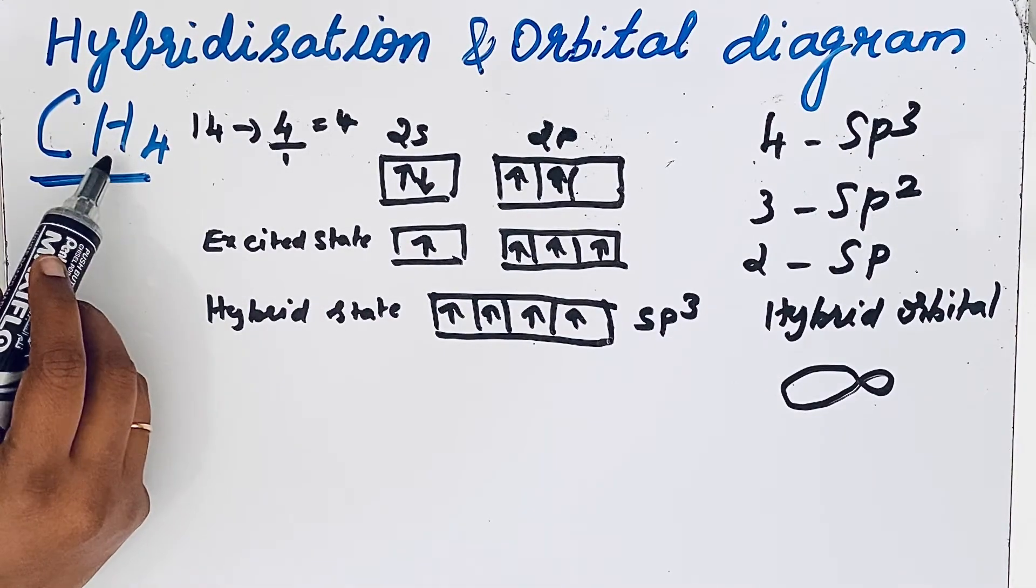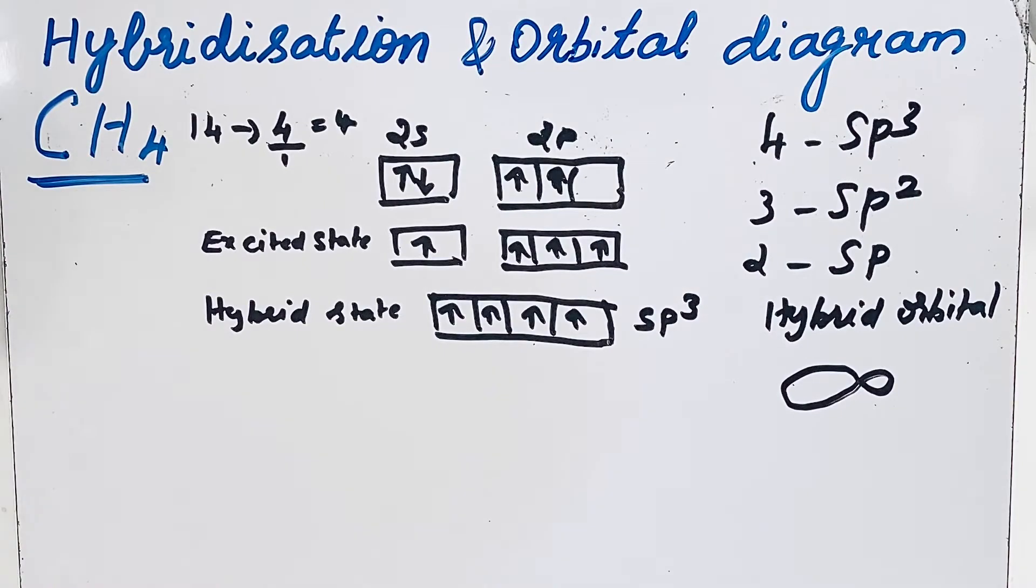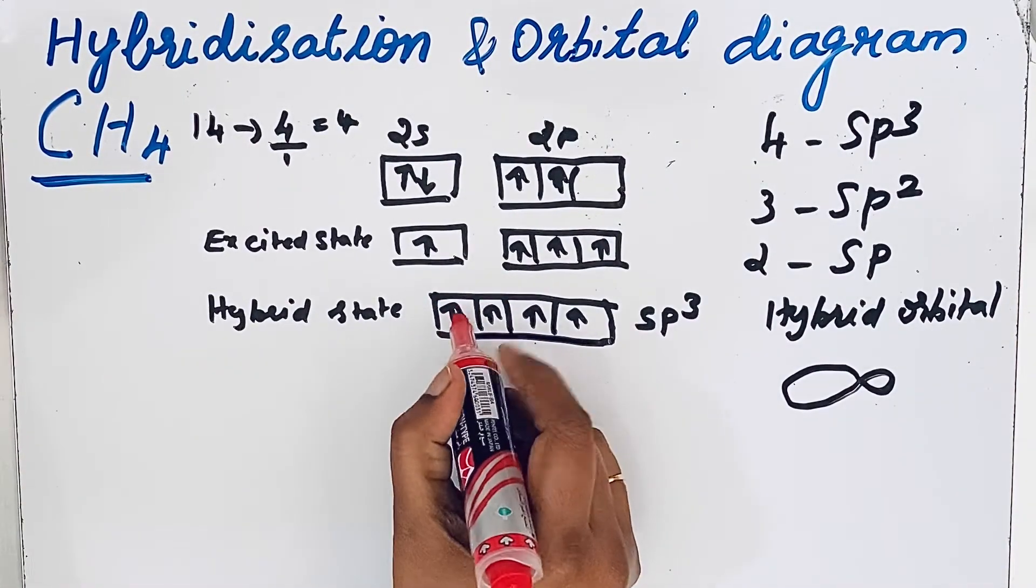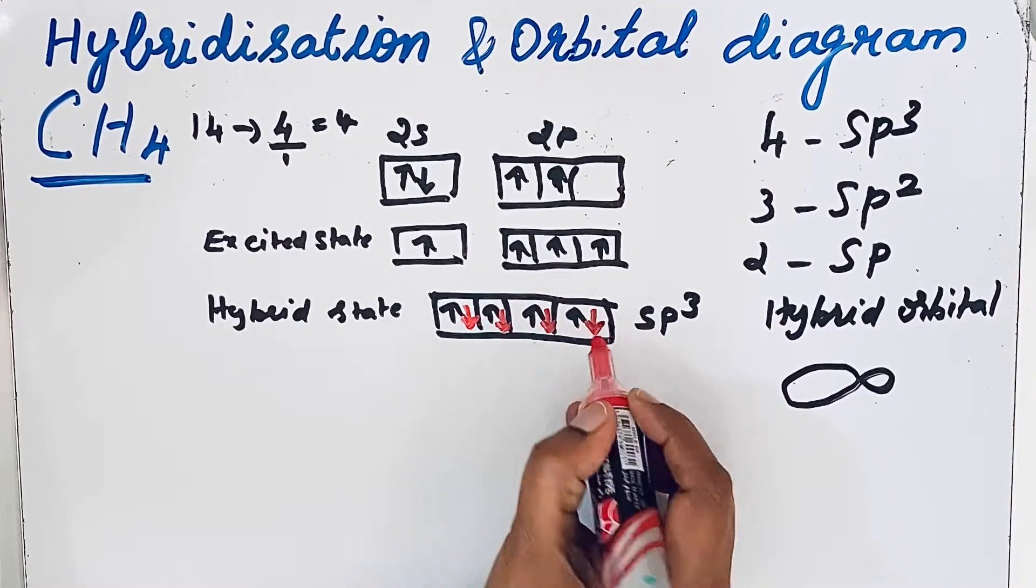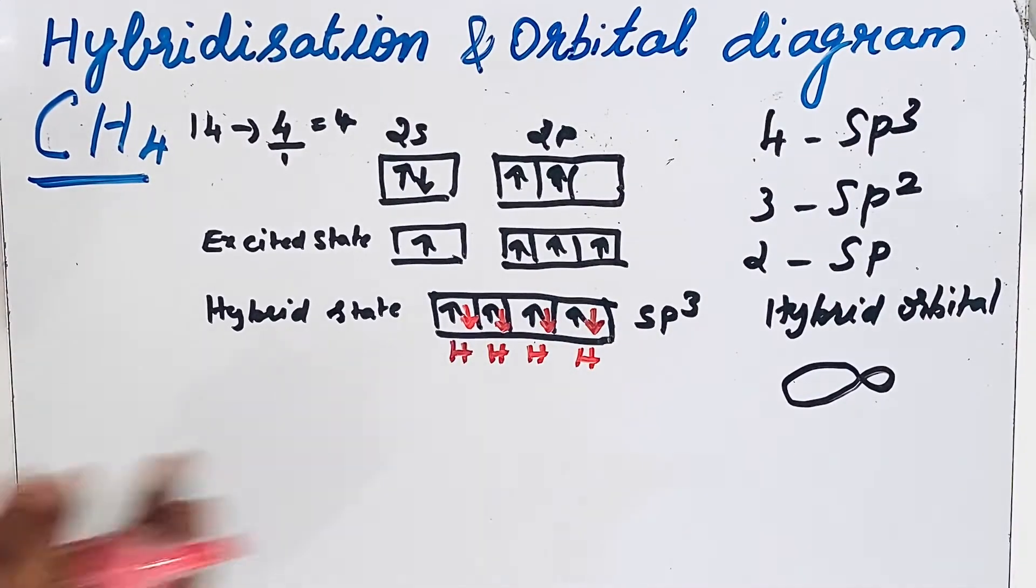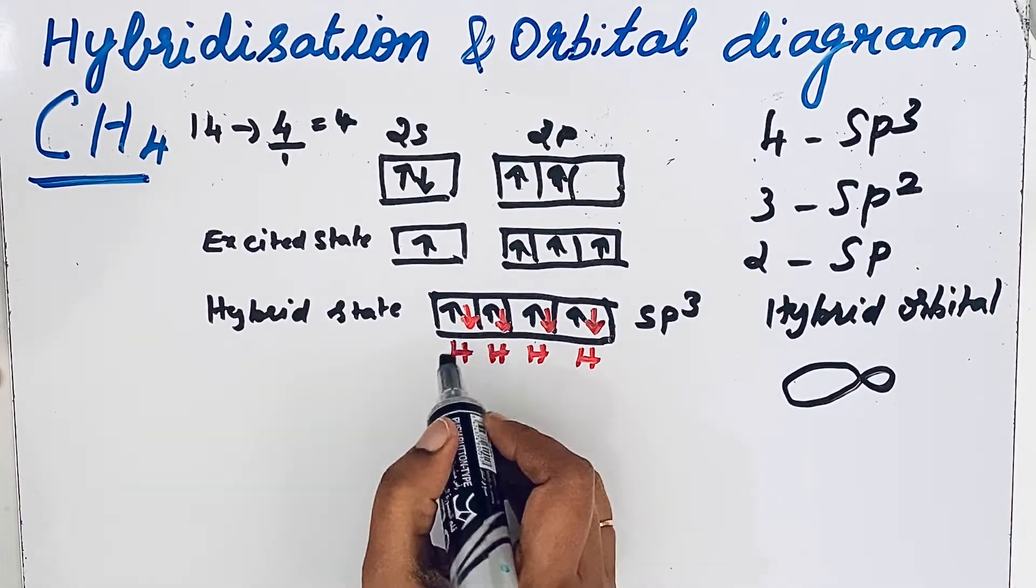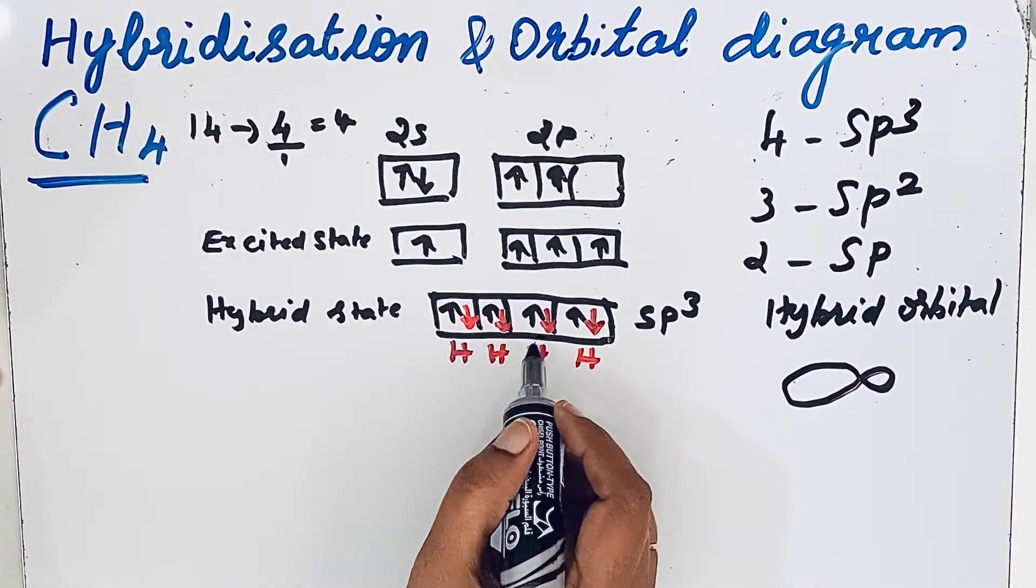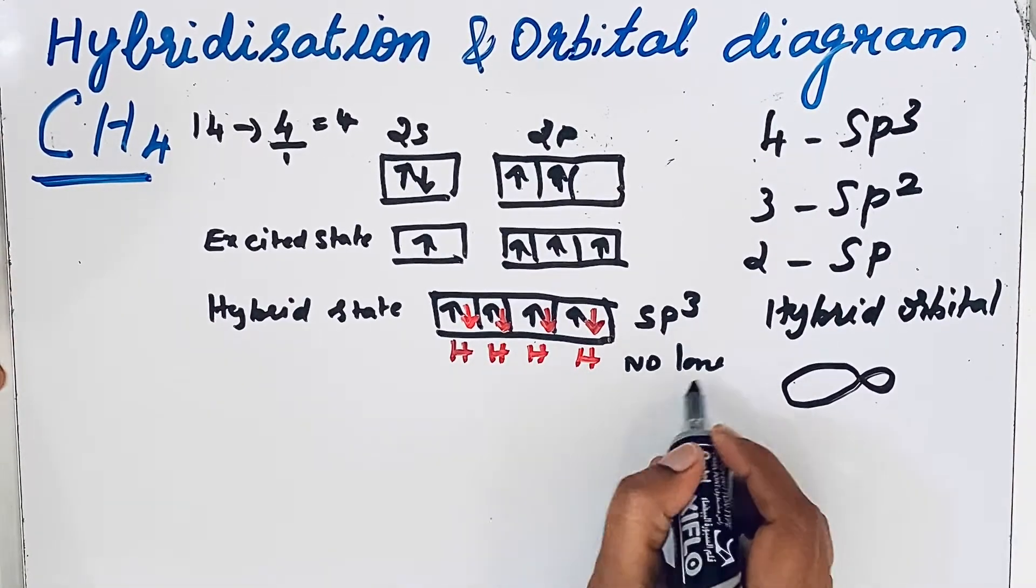Now how many hydrogen atoms are here? 4 hydrogen atoms are present. So these 4 hydrogen atoms each give 1 electron to these hybrid orbitals and they will produce 4 bonds. 4 C-H bonds will be produced. Any lone pair electrons are present here? No lone pair electrons.